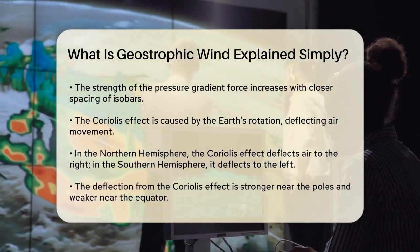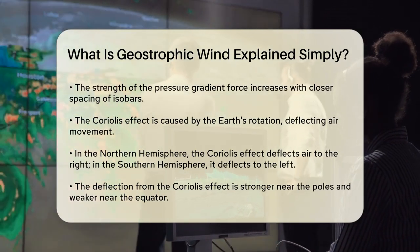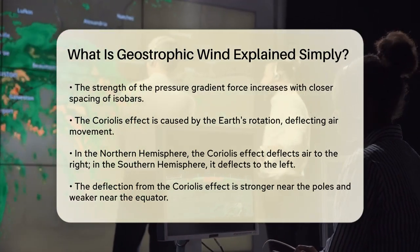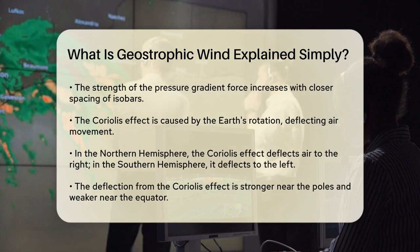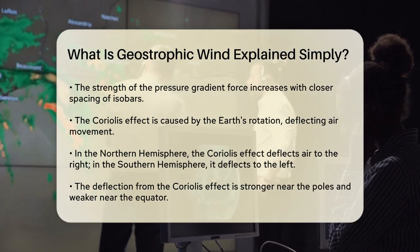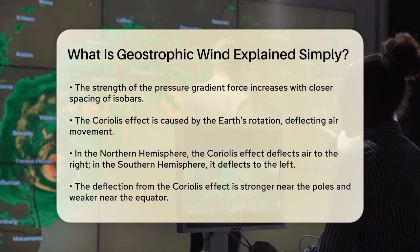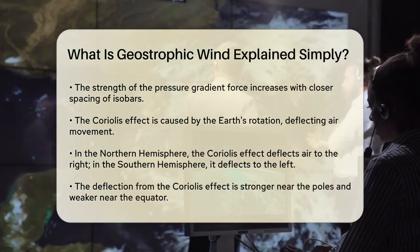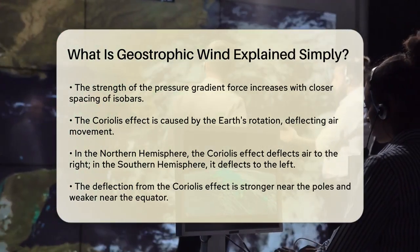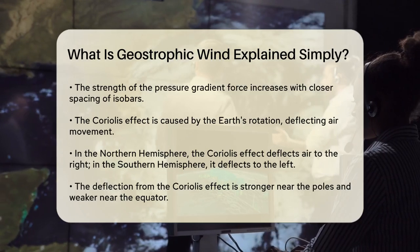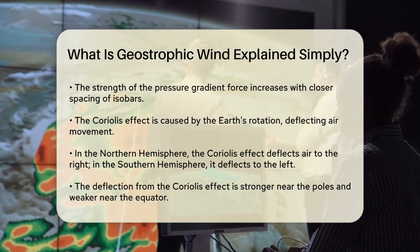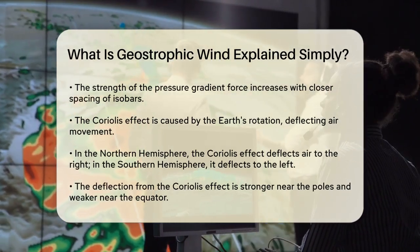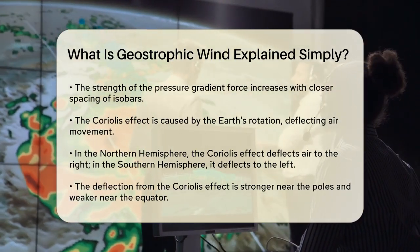Now let's add in the Coriolis effect. This is due to the Earth's rotation. In the Northern Hemisphere, the Coriolis effect deflects moving air to the right, while in the Southern Hemisphere it deflects it to the left. This deflection is stronger near the poles and weaker near the equator.